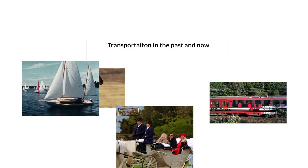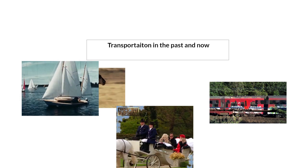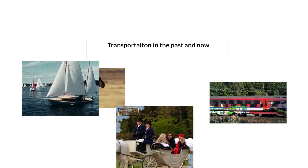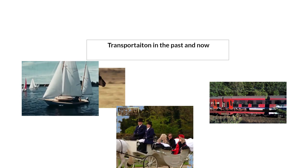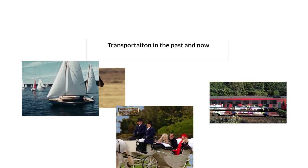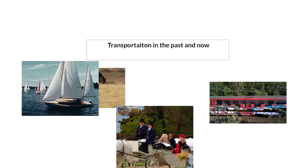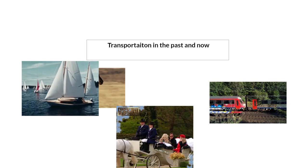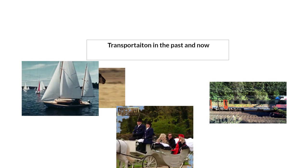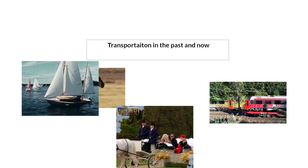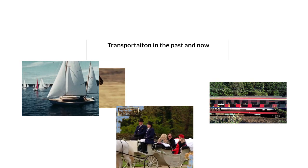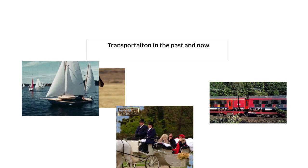Let's discover how people traveled in the past and how we travel now. Long ago, people didn't have cars or buses. They traveled on foot or used animals like horses and camels. Boats were also important for traveling across rivers and seas.